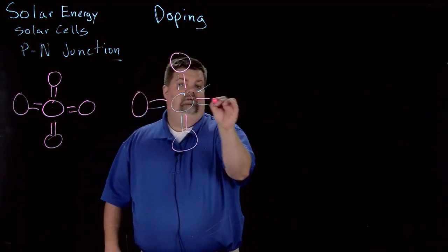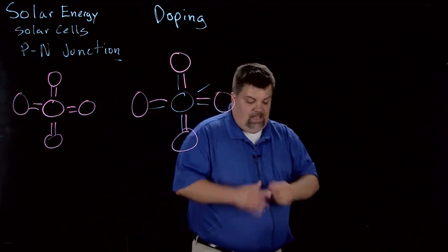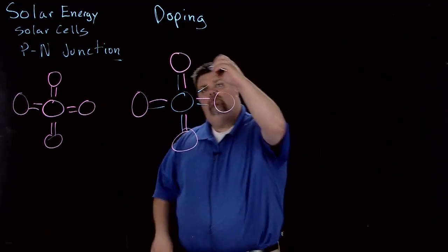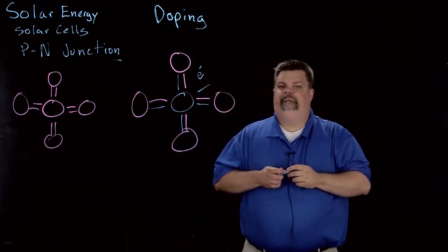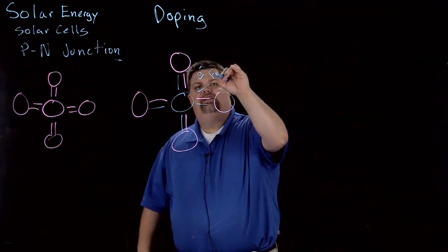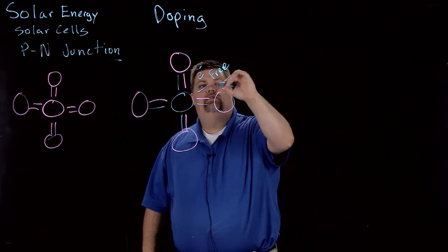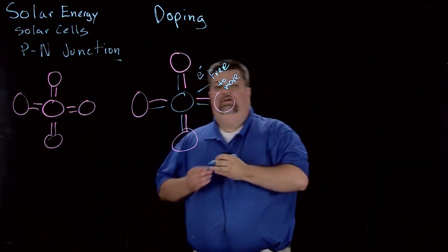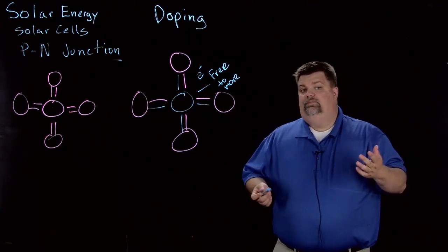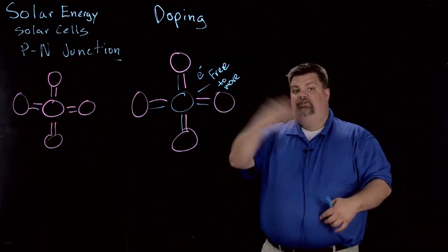It doesn't have to be silicon. What we end up having is we have an extra electron. This extra electron is free to move around throughout the structure, and that's what causes current - the flow of electrons.